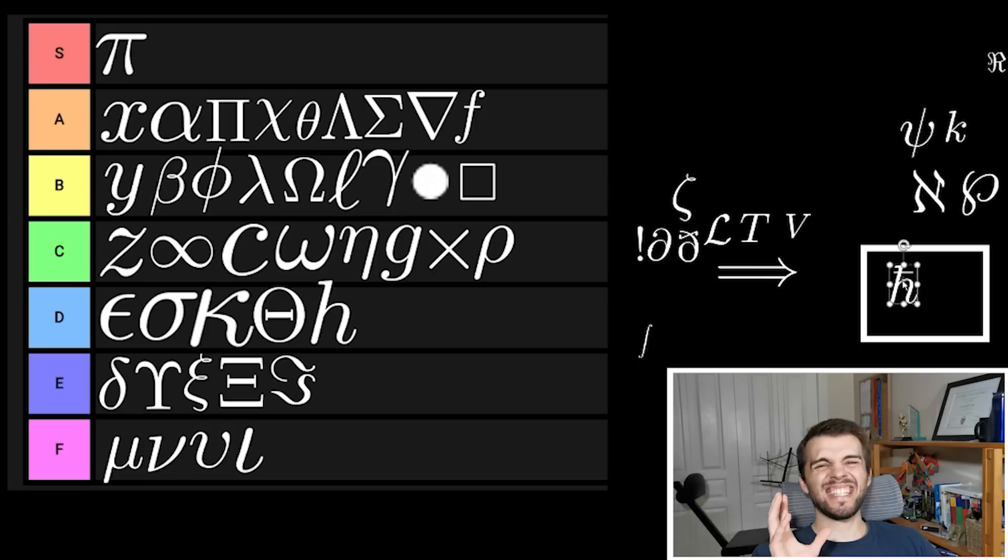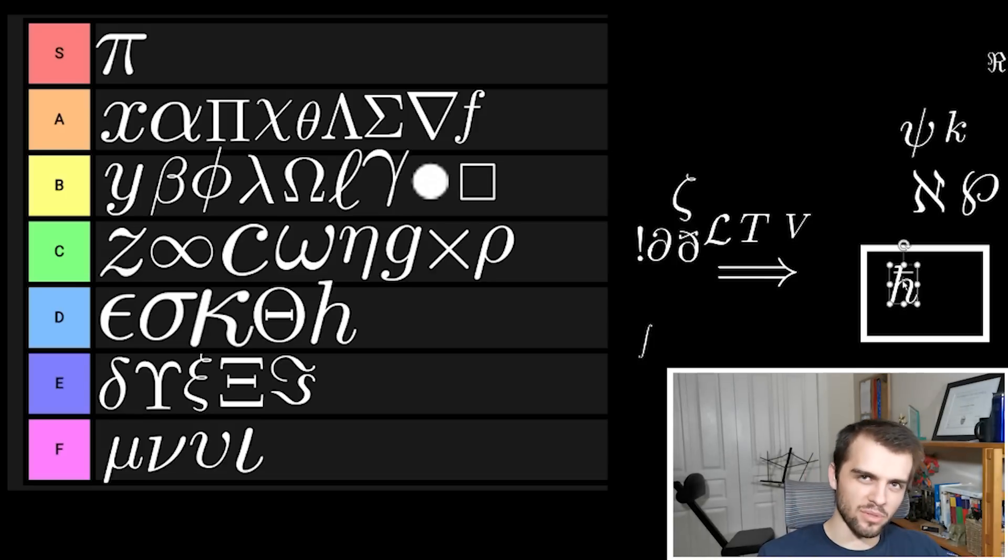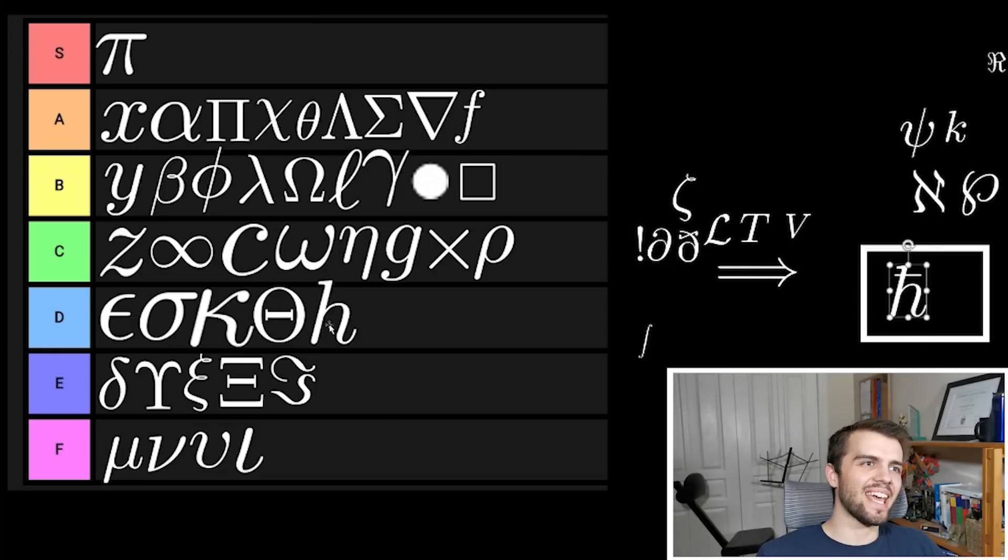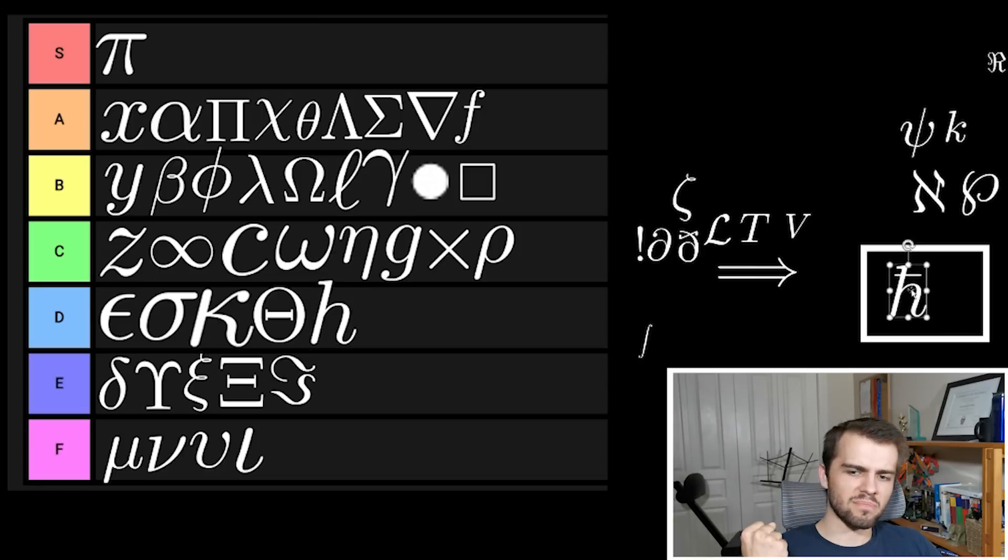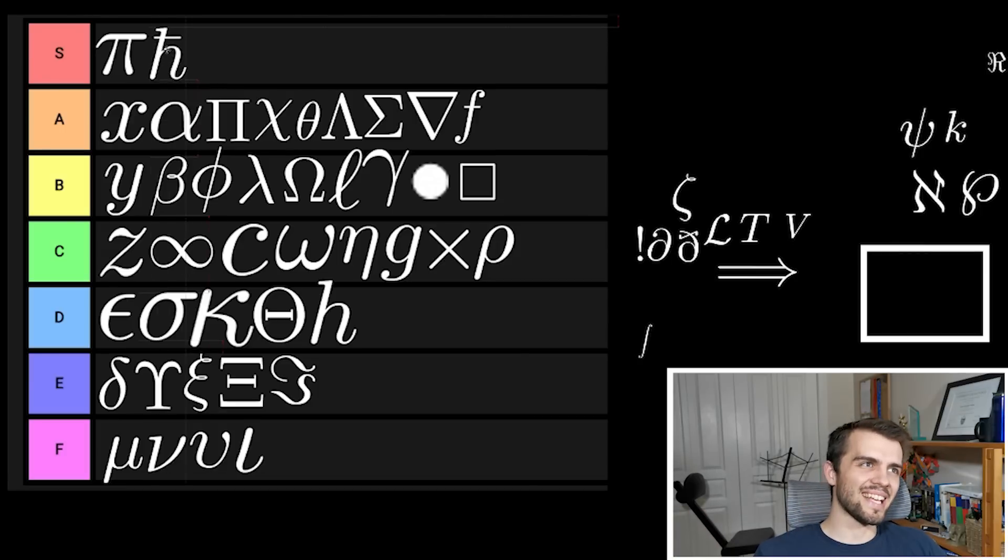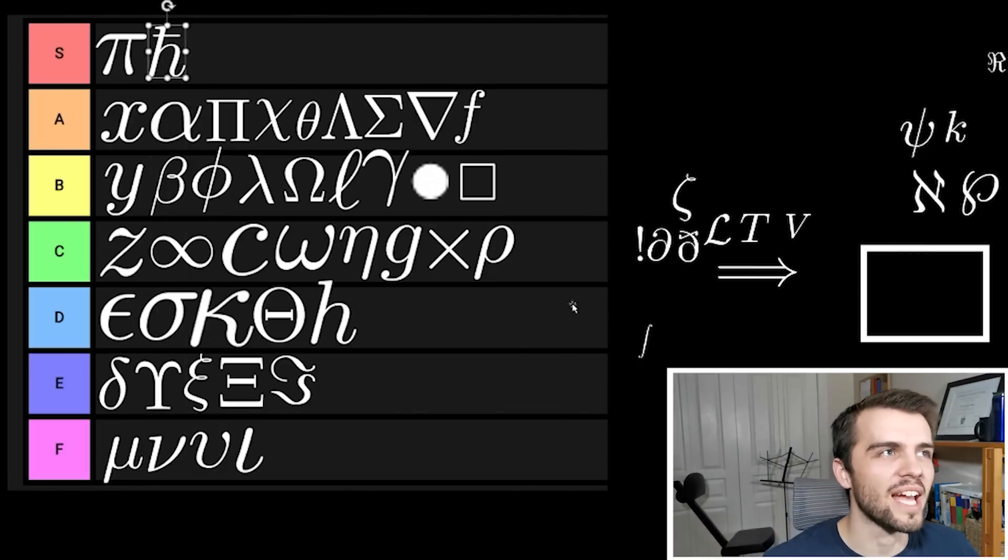Now h-bar is one of the classic important symbols in physics. What a beautiful symbol. It's nothing like H which belongs in D tier. Someone said you know what, I want to represent this number. There's no other symbol I'm going to use. I'm going to put an H, I'm going to put a bar on it. Belongs in S tier, clearly for its ingenuity.